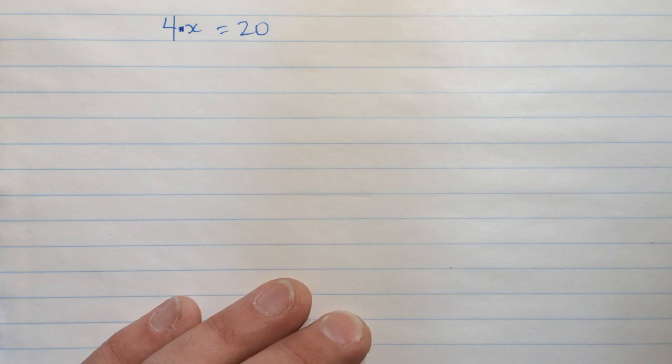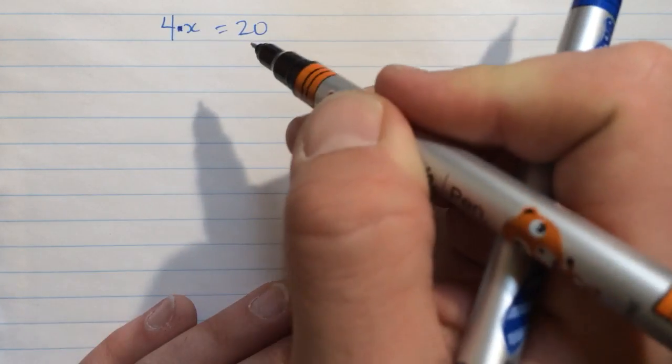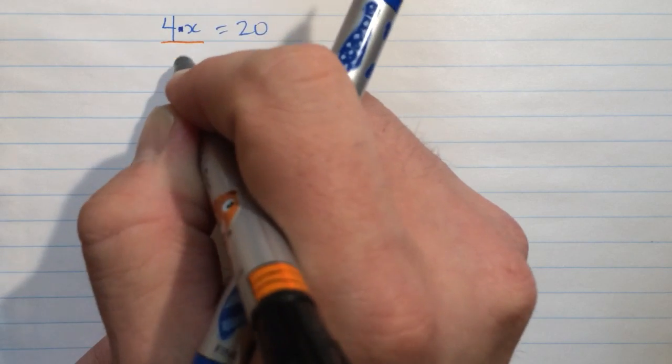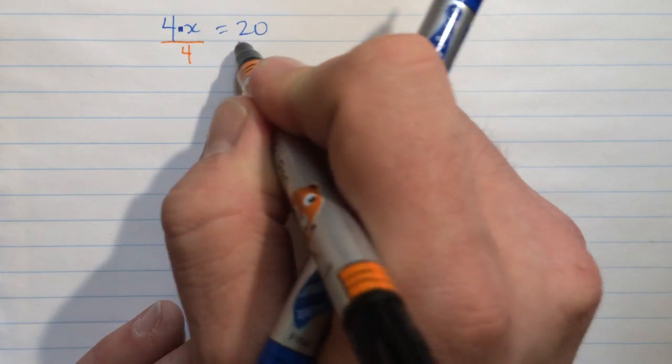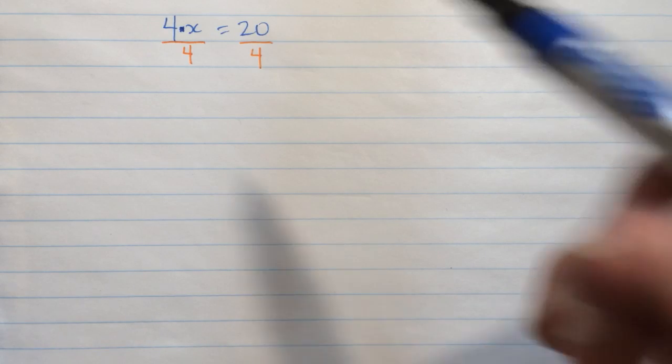And just like with addition and subtraction, we can perform the inverse operation to find out what this value of x must be. The inverse operation in this case is division, and so we will divide both sides, each entire side of the equation, by 4.